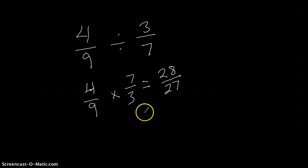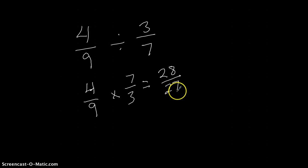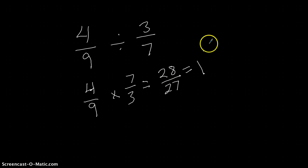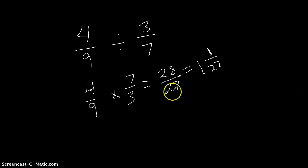With this improper fraction I need to see how many times twenty-seven will go into twenty-eight. It will go in one whole time, with one little part left over, and my denominator stays twenty-seven. So the answer is one and one twenty-seventh.